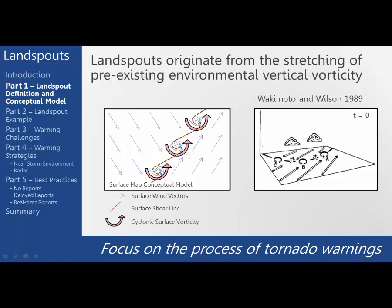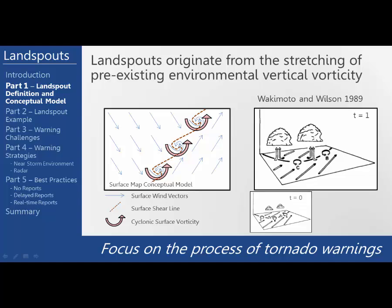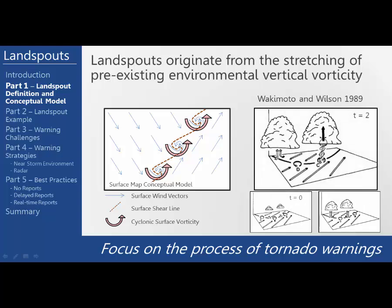They use a three-step process to show how landspouts develop. At the initial time step there are areas of enhanced vorticity along the surface boundary with cloud development separate from these areas. At a later time the mesovortices propagate along the boundary as the clouds continue to grow. In the final stage, if the updraft connects and stretches the vorticity of the mesovortices, then a landspout tornado could develop.